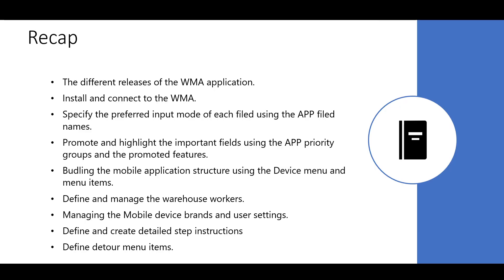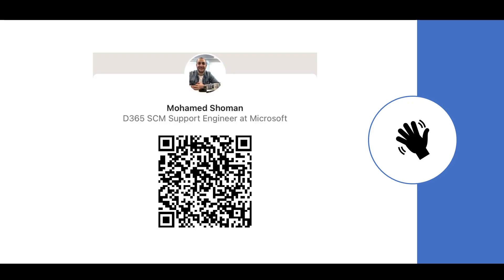Now let's recap what we discussed in this session. We reviewed the different releases of the Warehouse Management application, how to install and connect to the application, how to specify the preferred input mode of each field using the app field names, how to promote and highlight important fields using the app priority groups and the promoted fields feature, how to build the mobile application structure using the mobile device menu and menu items, how to define and manage warehouse workers, how to define and manage mobile device brands and user settings, how to define and create detailed step instructions for a specific step in the warehouse flow, and finally how to define and manage application detours. Thank you for watching and your time. Stay tuned for the next lesson. Feel free to reach out if I can help. Take care and good luck.